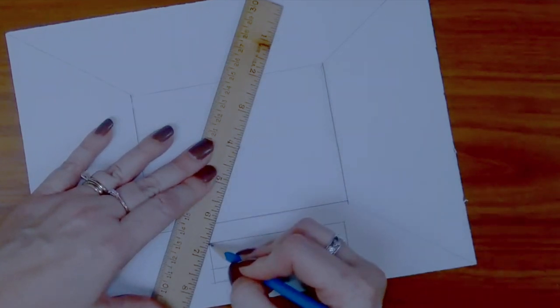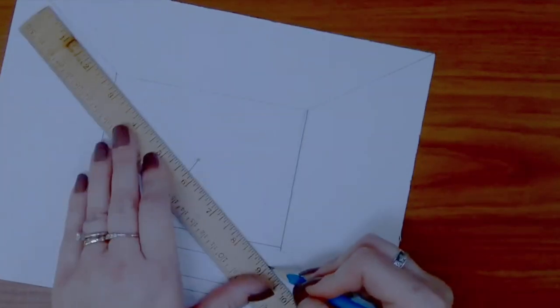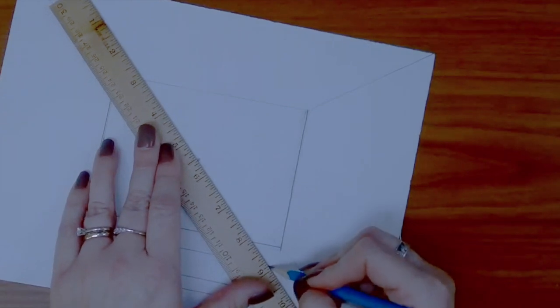Here's another fancy vocabulary word. The points or corners where the lines converge is called a vertex. You will connect each vertex to the vanishing point.